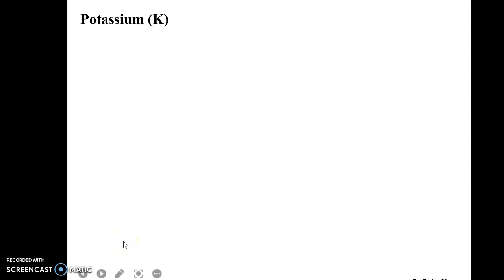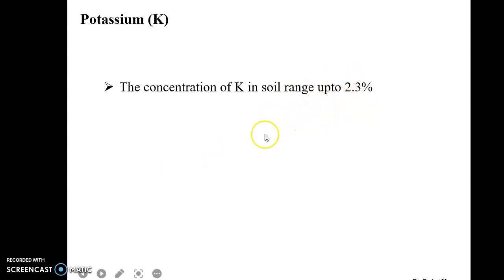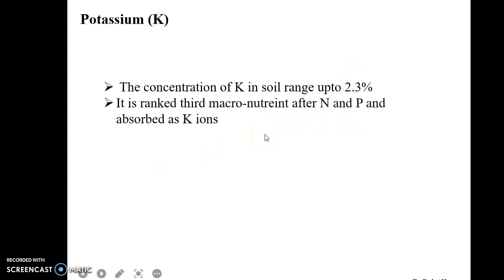First of all, what actually potassium is — the concentration of potassium in the soil is up to 2.3% and it is ranked third macronutrient after nitrogen and phosphorus, which can be absorbed as potassium ions.